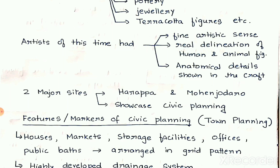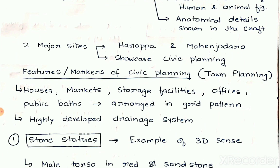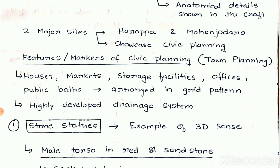Harappa and Mohenjo-daro also showcased their civic planning, also known as town planning. The features of their town planning included houses, markets, storage facilities, offices, and public baths — all arranged in a grid pattern, which shows their sense of organization. Even the drainage system was highly developed. These details we study in history; in this chapter, we are going to see the art forms created by Indus Valley people.